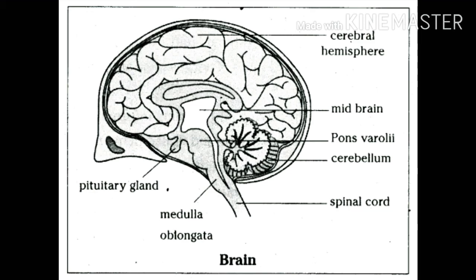The forebrain is mainly called the thinking part of the brain. The olfactory lobe of the forebrain receives impulses from receptors in the nose and controls the sense of smell. The cerebrum, which is the largest part of the brain, receives impulses from all the sense organs and controls their activities — including speech, facial muscle activities, auditory impulse, vision, touch, taste, smell, and temperature. The diencephalon contains the hypothalamus, which is an endocrine gland that releases hormones called neurohormones, and it controls the pituitary gland.